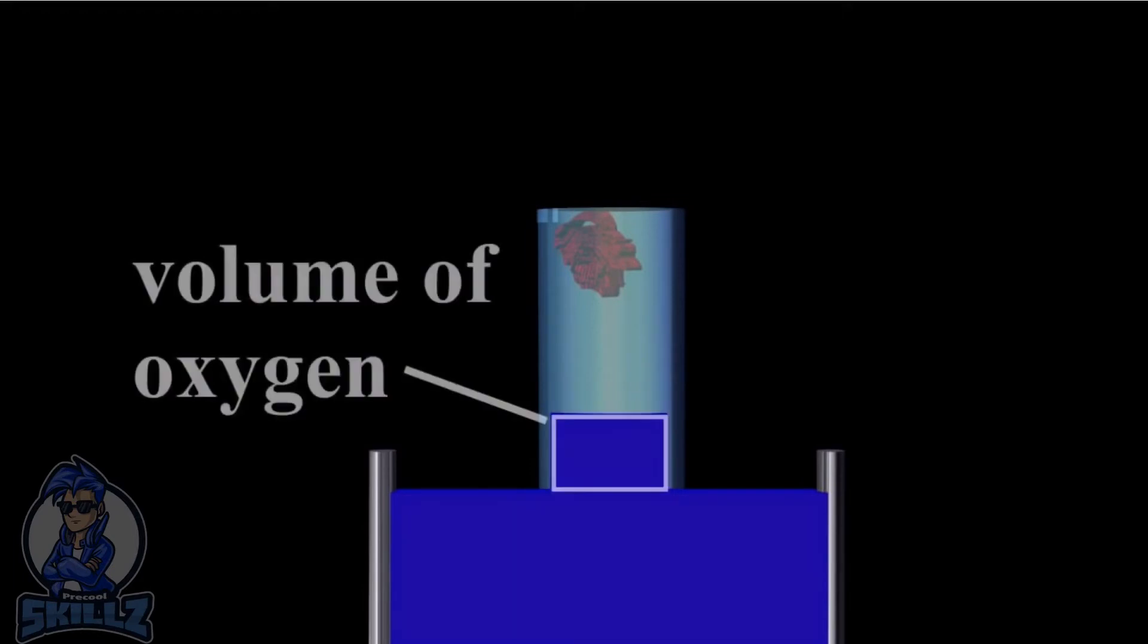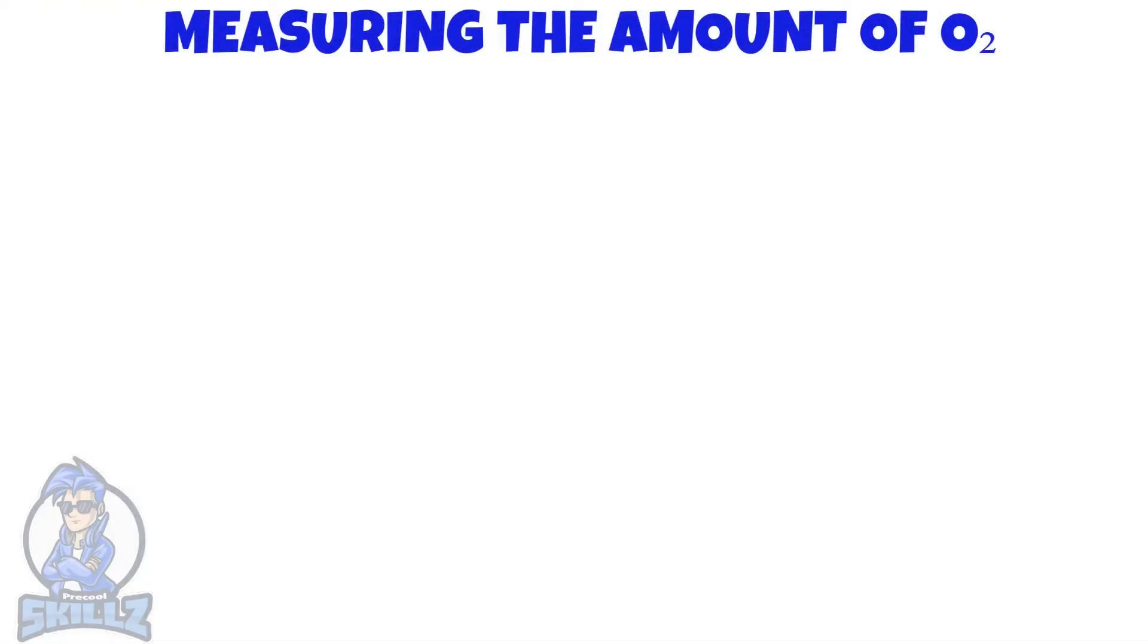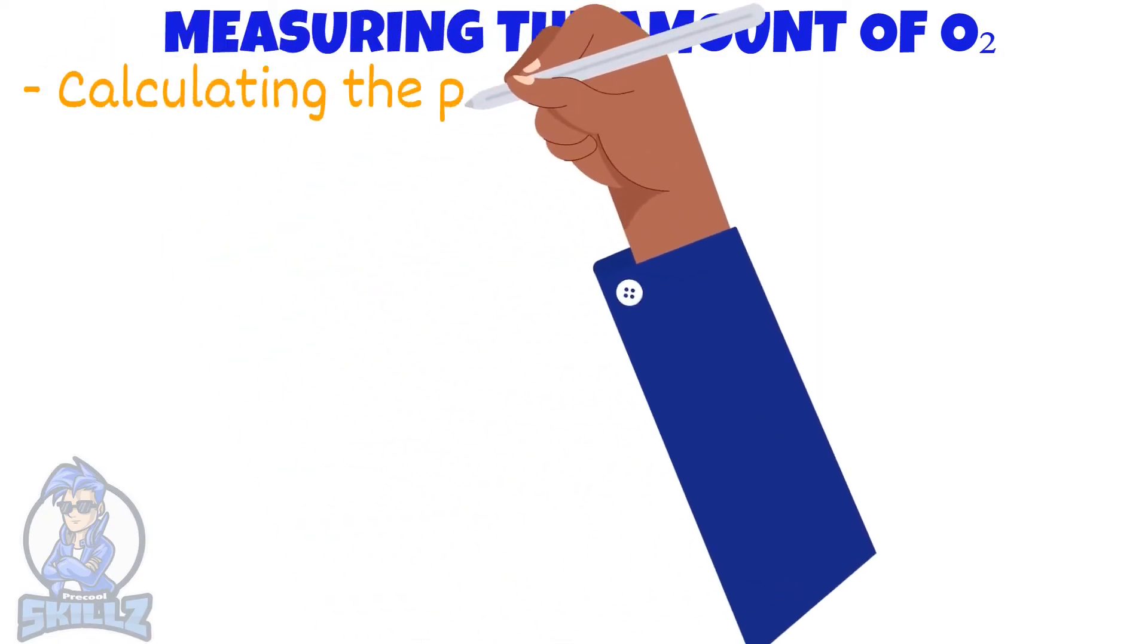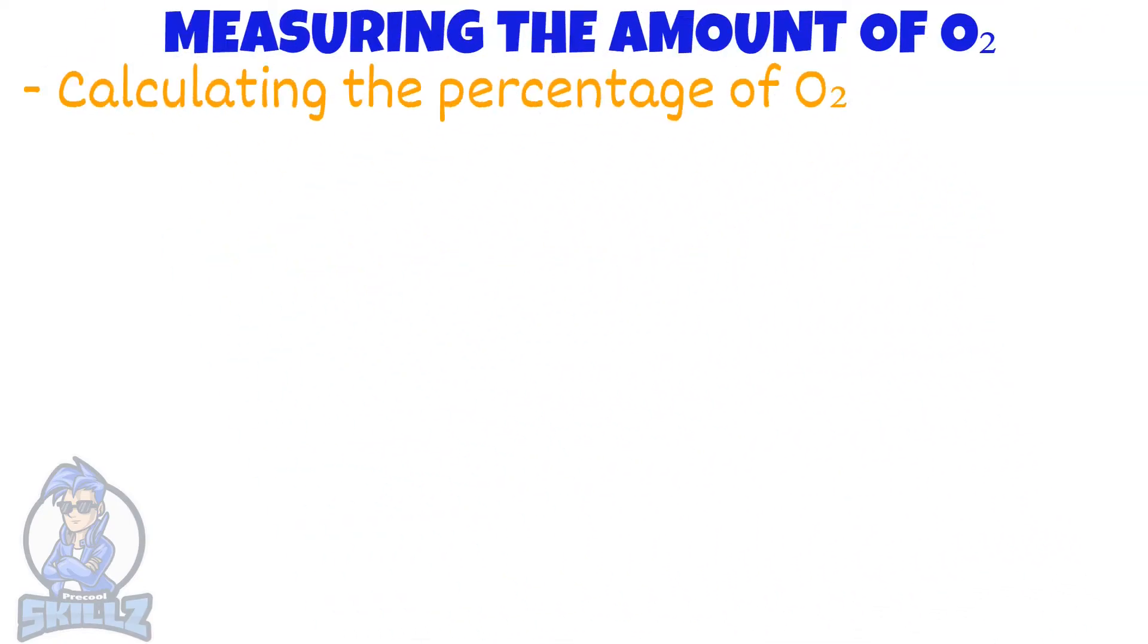When the process is finished, the added volume of water in the tube equals the volume of removed oxygen. Now, after the experiment is conducted, how do we calculate the percentage of oxygen? Here's how.